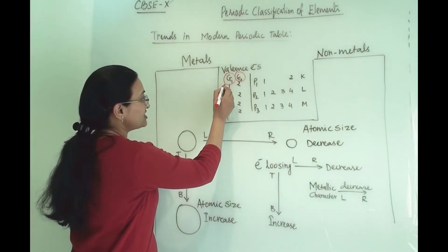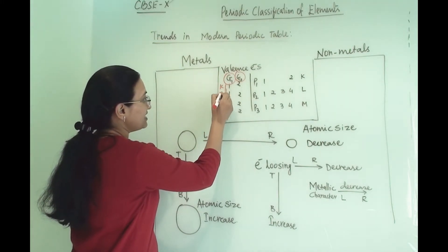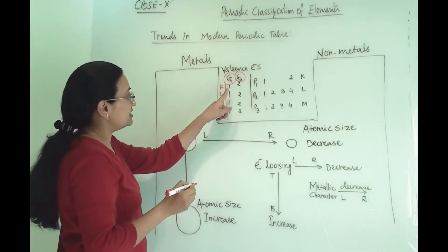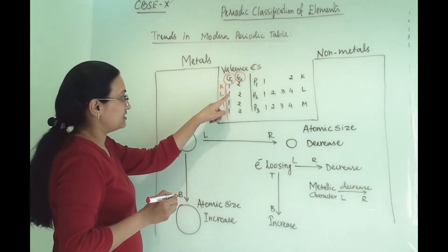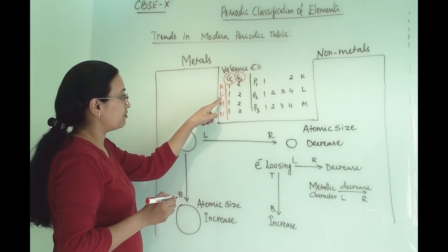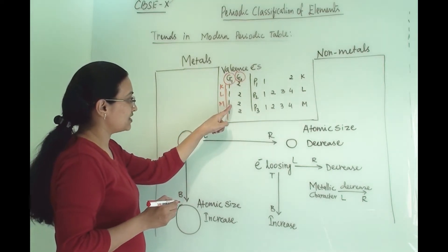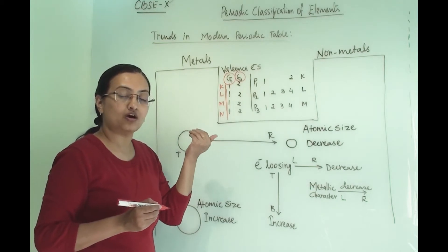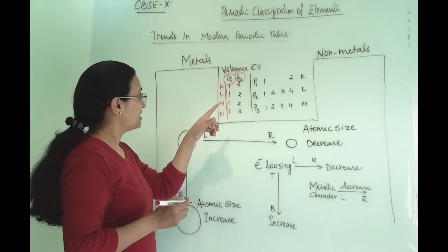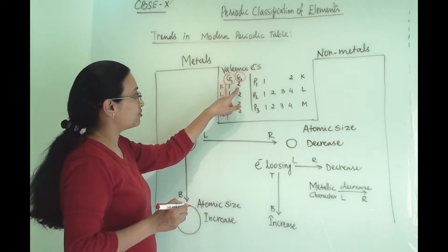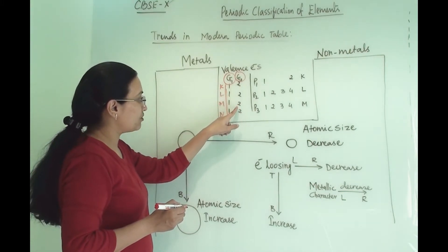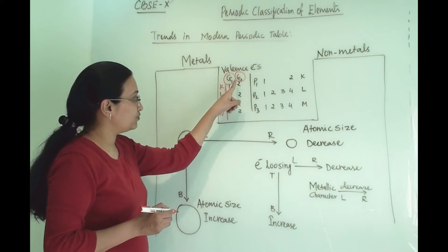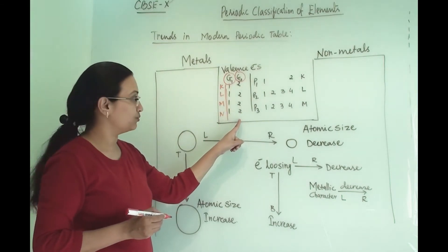So in the first period it will be K shell, then L, then M and N. This one electron is in the K shell, this one electron is in the L shell, and this one electron is in the M shell — and inside, all the orbitals are completely filled. Similarly for group 2, the 2 electrons will be there in their valence shell. So the valence electron will remain the same across the group.